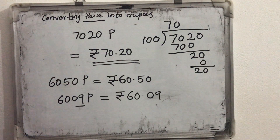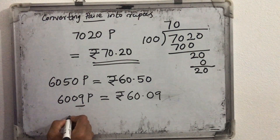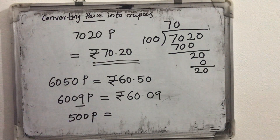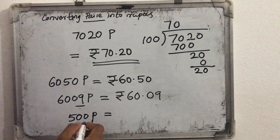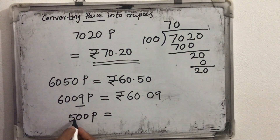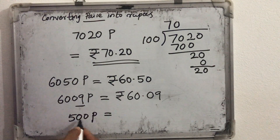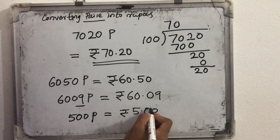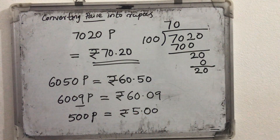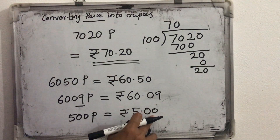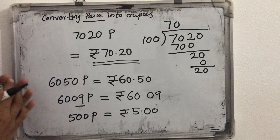Now if the paise is only this much — what will be if it is 500 paise? Here also when we convert, we take the last two places and insert the decimal point here. So it will be 5 rupees. After 5, decimal point we want to insert. After decimal point it will be 2 places — so 5.00 rupees.